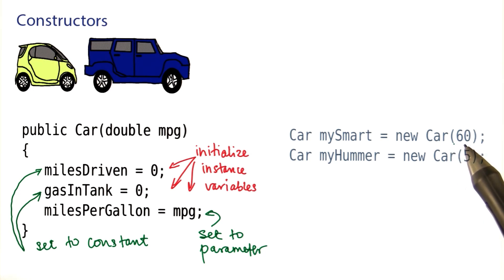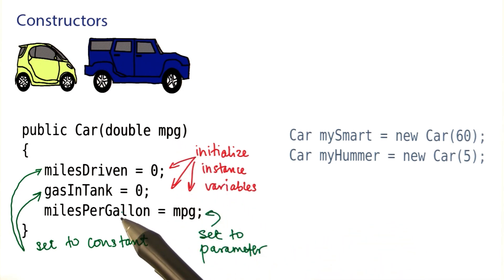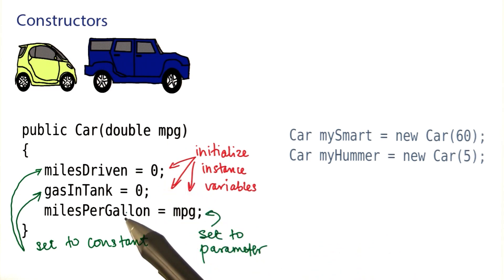Here, we construct a car with 60 miles per gallon. The value 60 is passed into the parameter variable and is then set to the instance variable here. Over here, we construct a car with 5 miles per gallon. And again, the 5 is passed into the parameter variable and then used to initialize this instance variable.